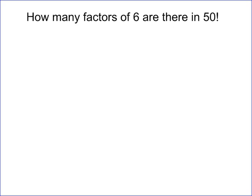So what we really need to find out is how many pairs of 2 times 3 are there in 50 factorial. You ask yourself: are there more 2's or more 3's? Well, there are obviously going to be more 2's, so the number of pairs we can form depends on how many 3's there are.